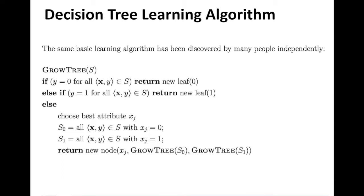Now we discuss how to actually grow the tree. First, we want to choose the best attribute from our list of available attributes, with J denoting all the different attributes and X_J being one particular attribute. You choose the best attribute to split on. Let's say that attribute is also binary for simplicity, so X_J can be zero or X_J can be one.